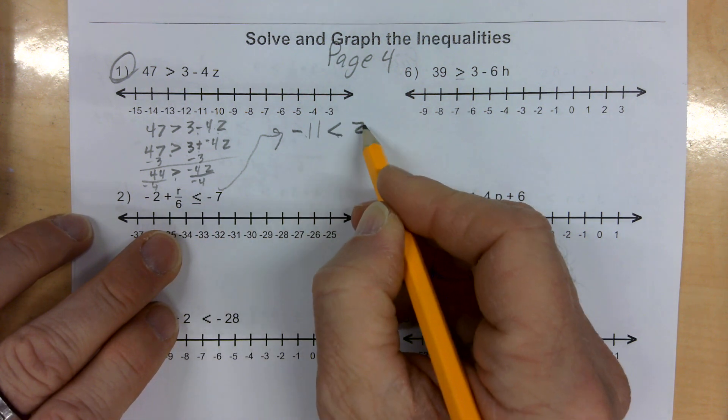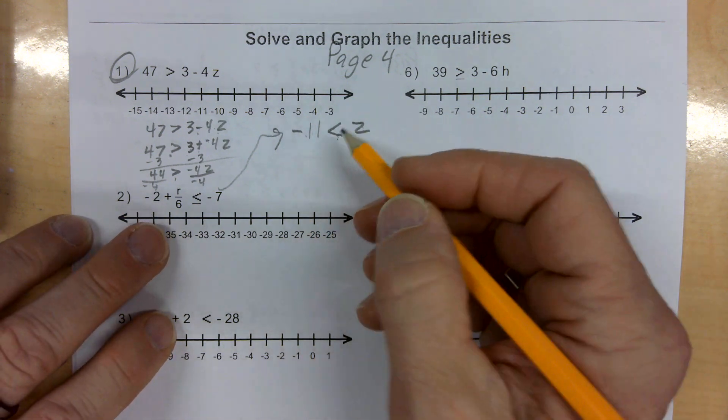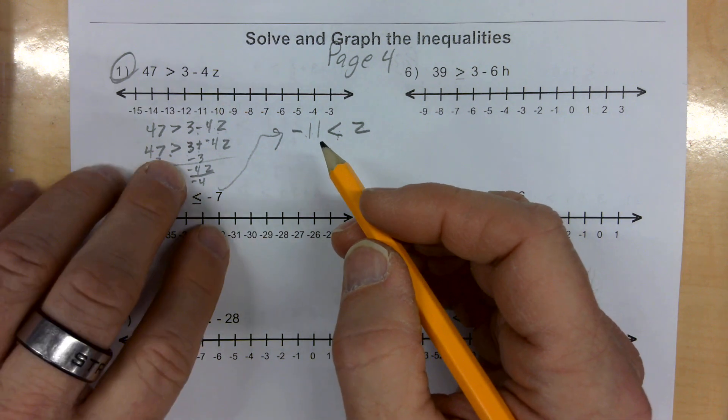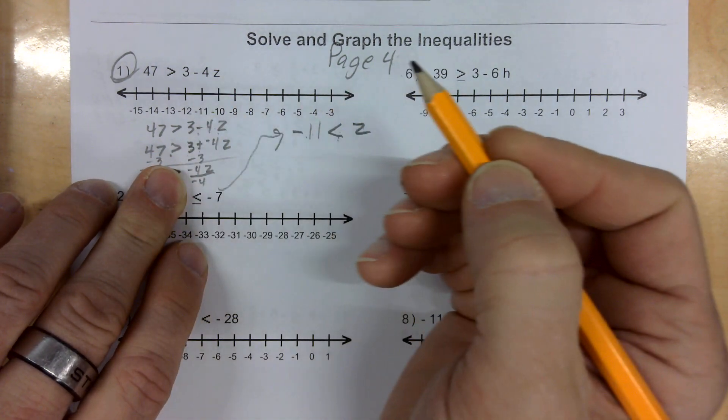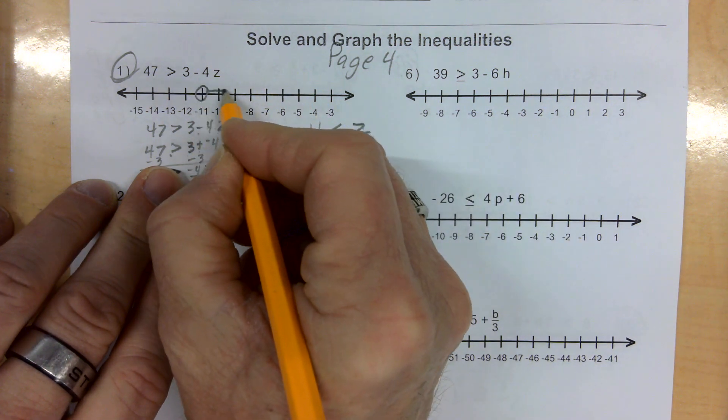Negative 11 is less than z, which means z is greater than negative 11. Greater than sign does not require as much lead. Therefore, it's an open circle. In other words, it does not include 11. It's not equal to 11. And z is greater than negative 11. So, I go to negative 11 and I say greater than.